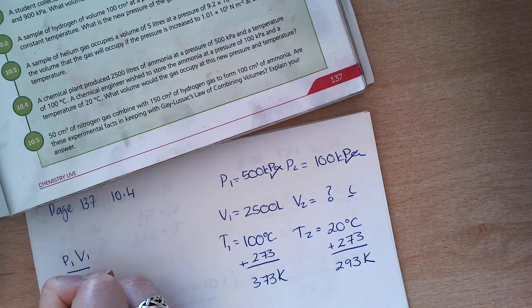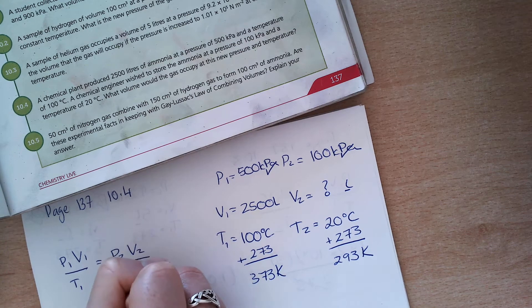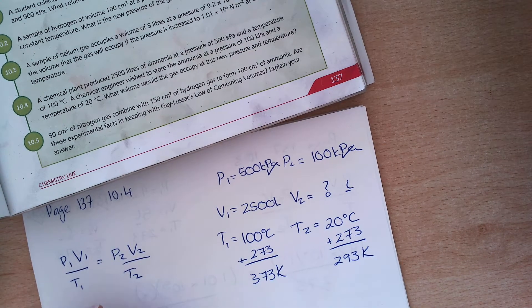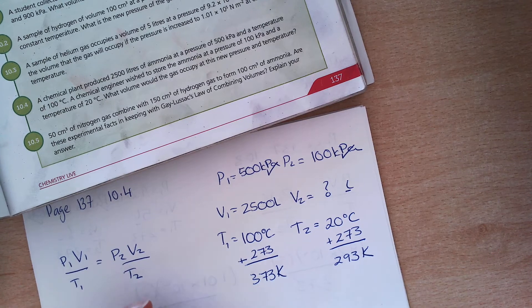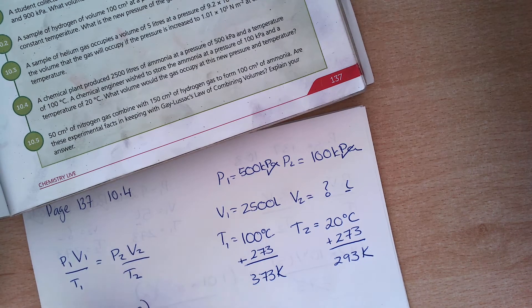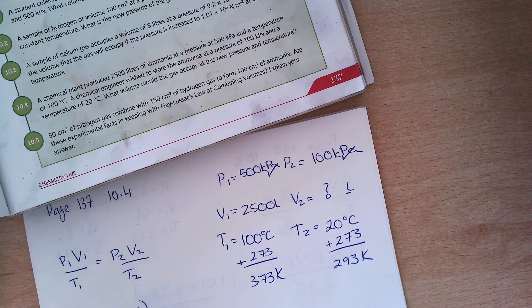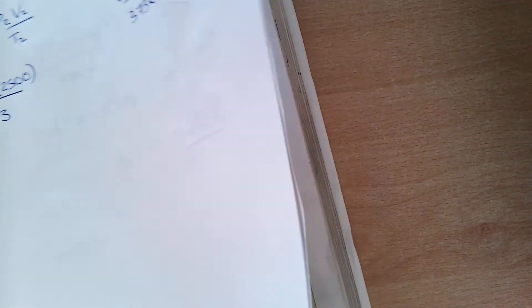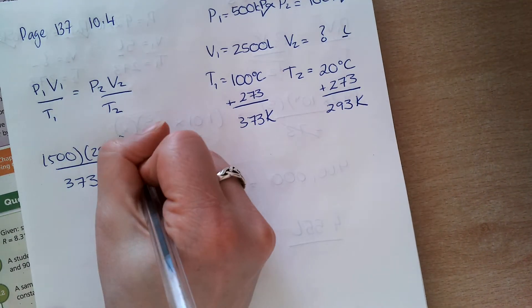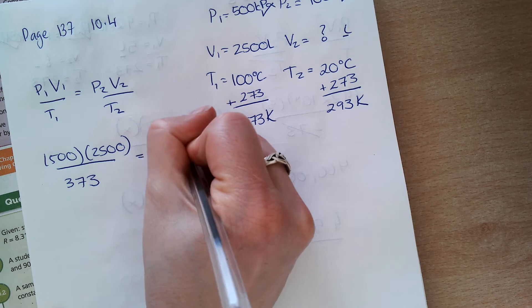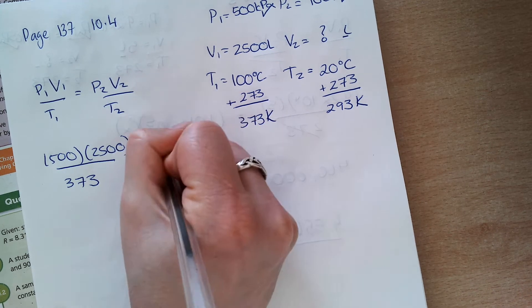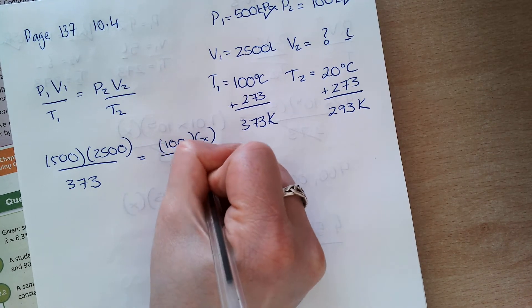So, P1, V1 over T1 equals P2, V2 over T2. I have 500 multiplied by 2,500 all over 373. And that is equal to 100 multiplied by X all over 293.